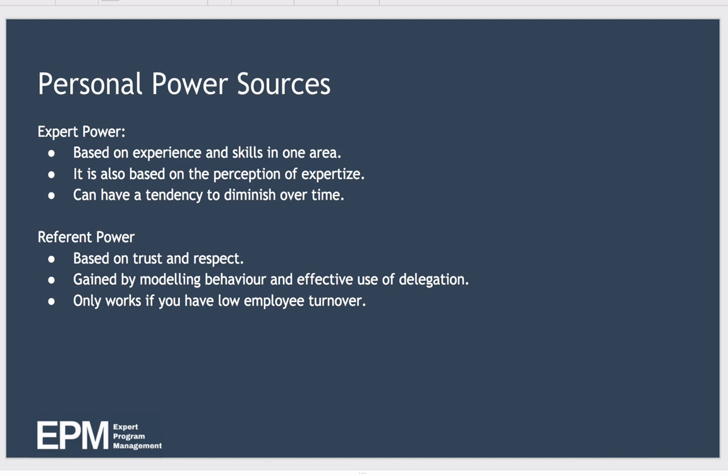The fifth and final type of power is referent power. You use this power when you use your status as a trusted and respected role model to achieve compliance with your wishes. Organizational leaders and managers who have referent power have frequently gained it over time by modeling the behavior they expect to see in others. Referent power is also gained by delegating increased authority and autonomy to subordinates over time. In general society, celebrities have referent power, which is why they're often paid a lot of money to advertise products — their status as a role model makes us want to be like them, so we buy the products they promote.